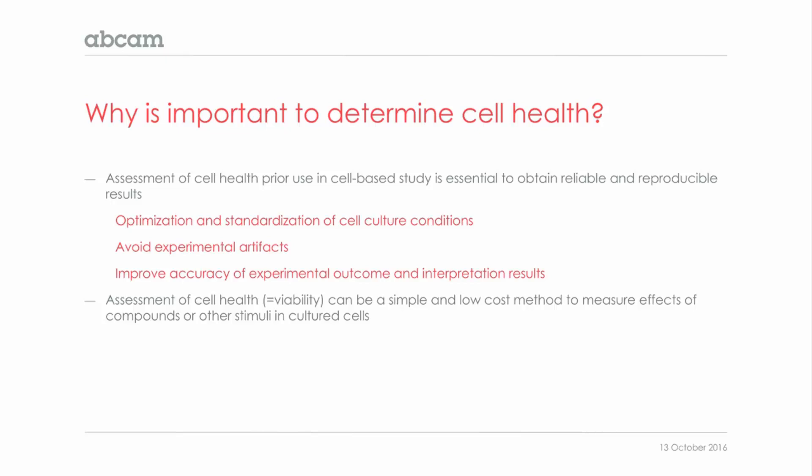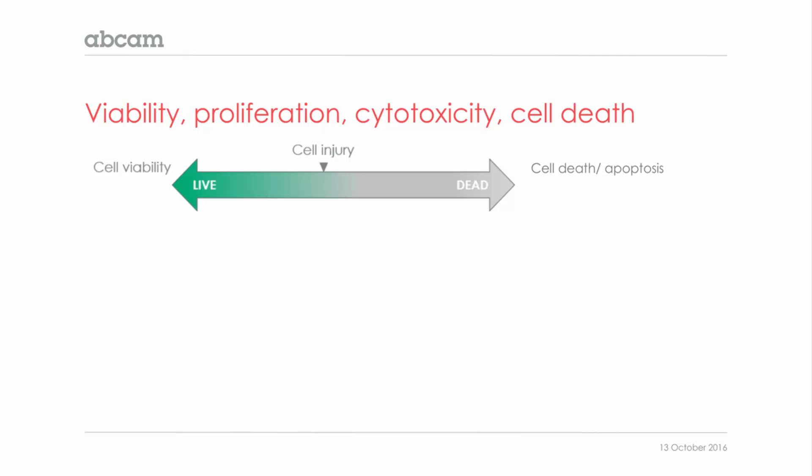This arrow represents the balance of life and death that cells are subjected to. Cells will generally proliferate and divide, and at some point during the cell cycle, the cells will be subjected to stress stimuli, which can be endogenous — like a cell replication defect — or exogenous, like drug treatment. If the cell cannot repair and overcome this stress, then cells will die.